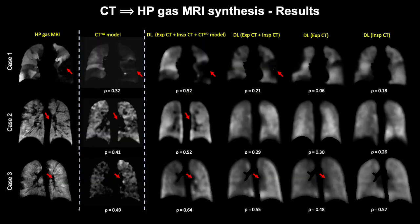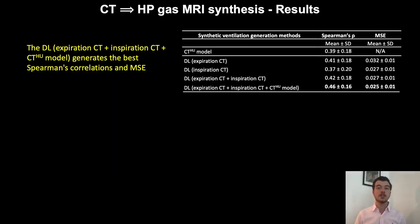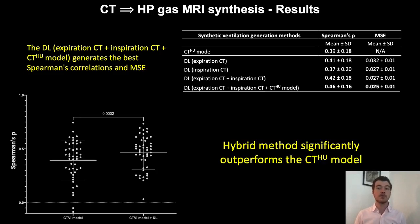Here we can see the results for three cases in the dataset comparing the gold standard hyperpolarised gas MR ventilation images to synthetic ventilation images generated either by CT-VI modelling or by deep learning approaches. Qualitatively, numerous examples of the CNN generated synthetic ventilation images accurately replicated ventilation defects in the hyperpolarised gas MRI scans. The hybrid model deep learning method generated the highest voxel-wise Spearman's rho, outperforming the CT-HU model and all of the DL methods for these three cases. Quantitatively, the hybrid approach leveraging both the inspiratory and expiratory CTs along with the CT-HU model as inputs to a CNN yielded statistically significant improvements over all of the deep learning approaches. Furthermore, this approach significantly outperformed the CT ventilation model.